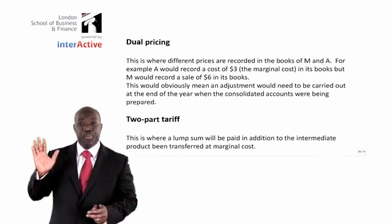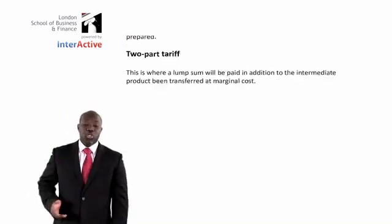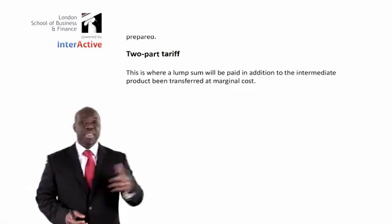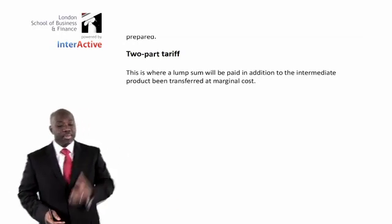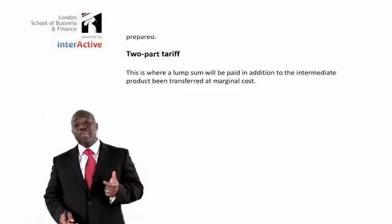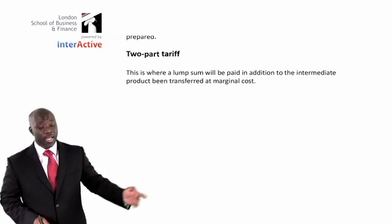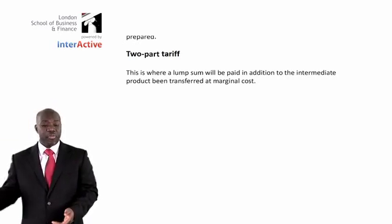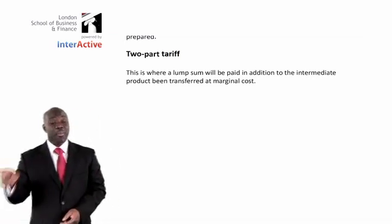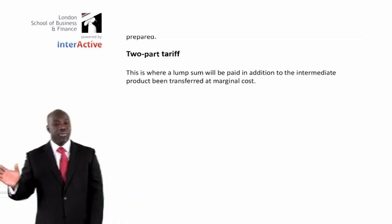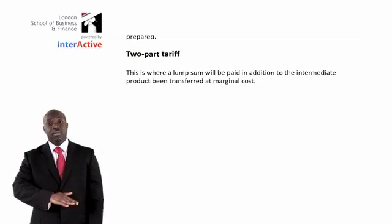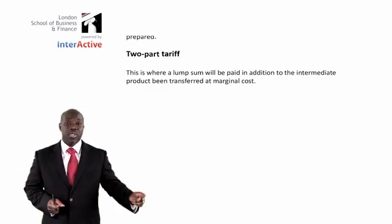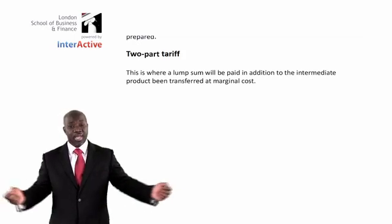Two-part tariff, on the other hand, is where the two managers agree on a lump sum paid by the buying division to the selling division. This lump sum helps the selling division cover some of its fixed costs. During the period, the selling division transfers goods to the buying division at marginal cost. The buying division is therefore not buying at market price — it buys at marginal cost — while the selling division also receives a lump sum to cover some of its fixed costs. So both parties will be happy with such a situation.